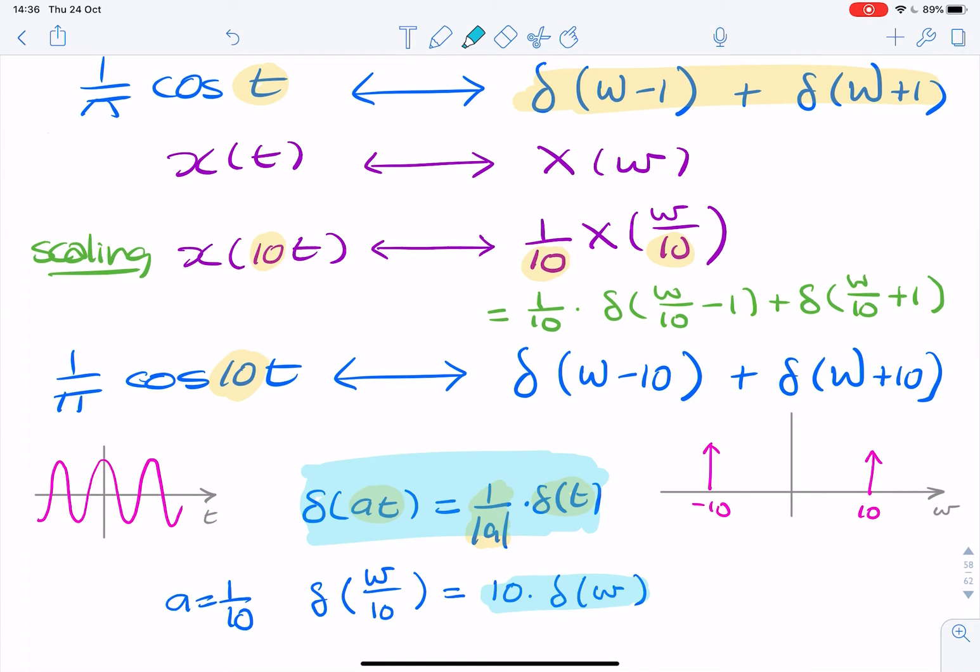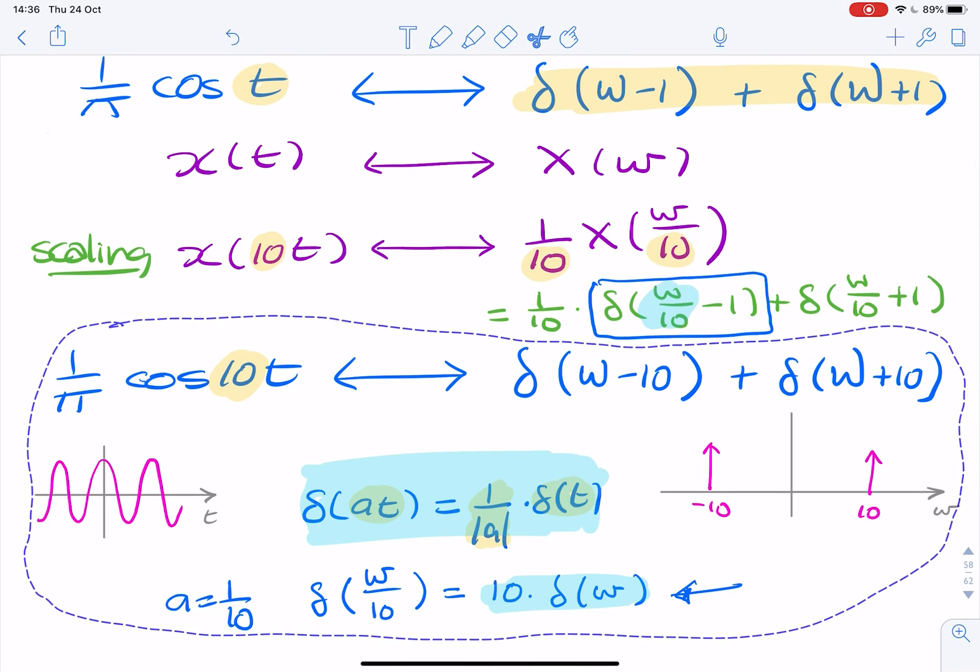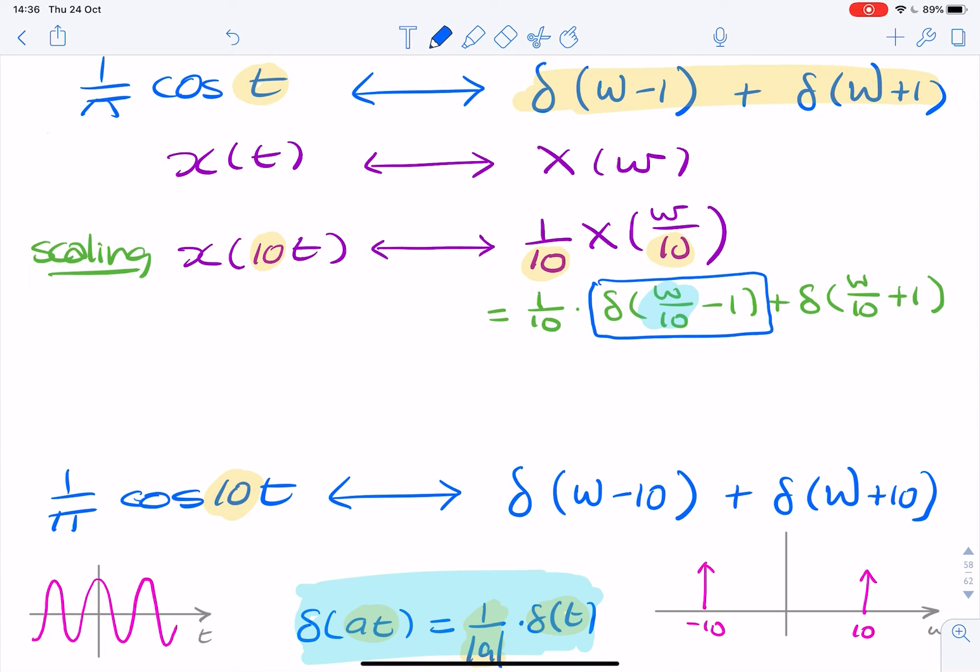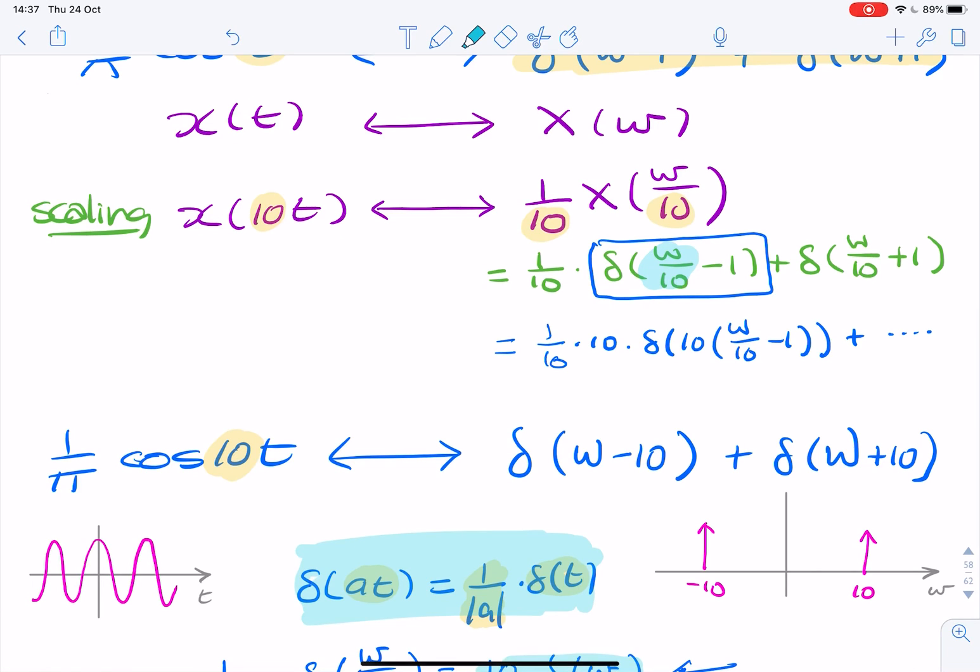So if you go back to the question, using the scaling property, we ended up with this, which is a scaled delta Dirac function. So what we should do is replace this with what we found here. I can now actually rewrite this by saying it's 1 over 10 times 10 times delta Dirac function of 10 times omega over 10 minus 1 plus the same again. And that will give us exactly what we found from the Fourier table pair.